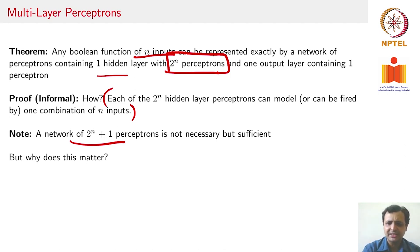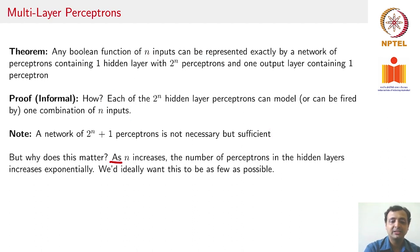Why does this necessary and sufficiency matter? As n increases, the number of perceptrons in the hidden layers increases exponentially, 2^n. Your multi-layer perceptron can become too computationally intensive to train or even just to take a forward pass through. You ideally want to find the multi-layer perceptron solution that has least number of neurons in your hidden layer.